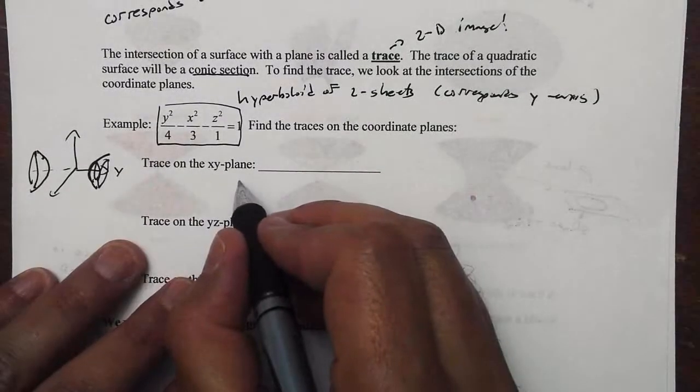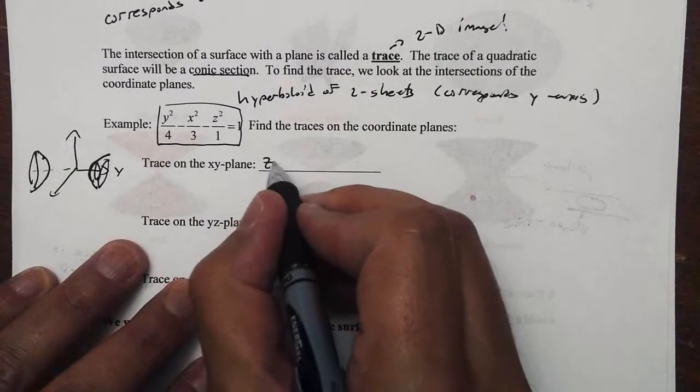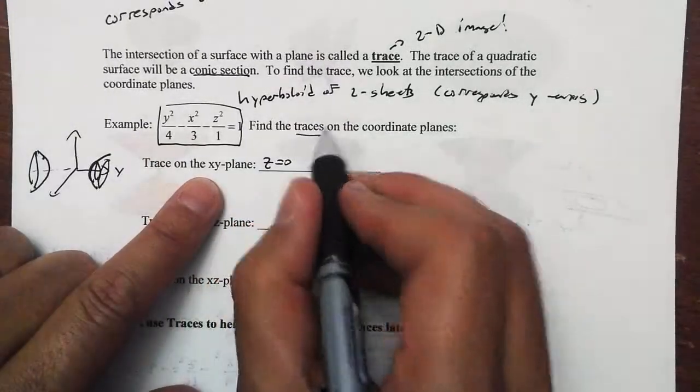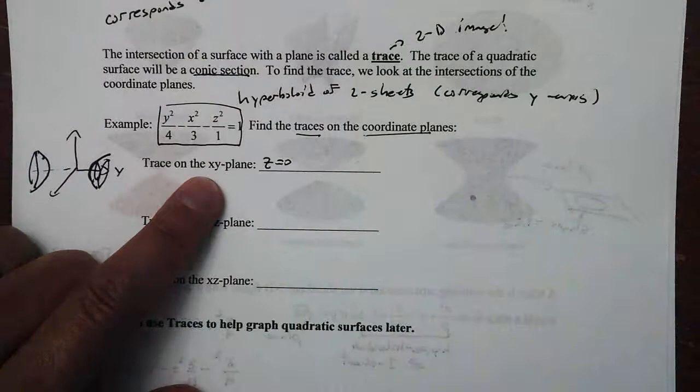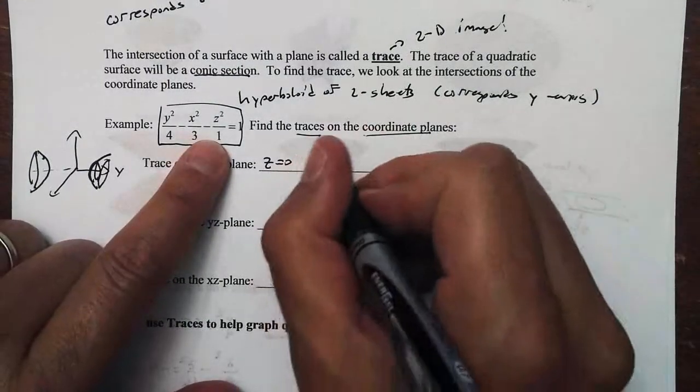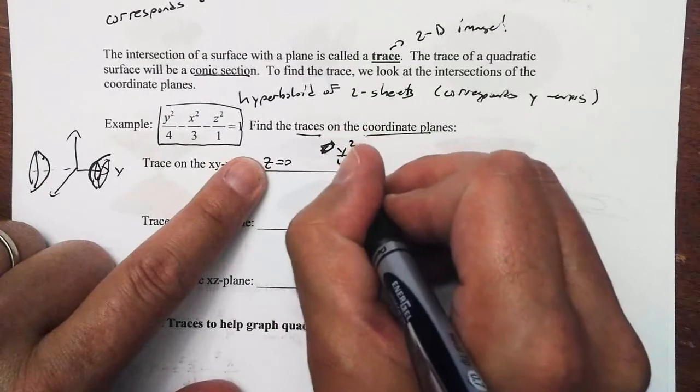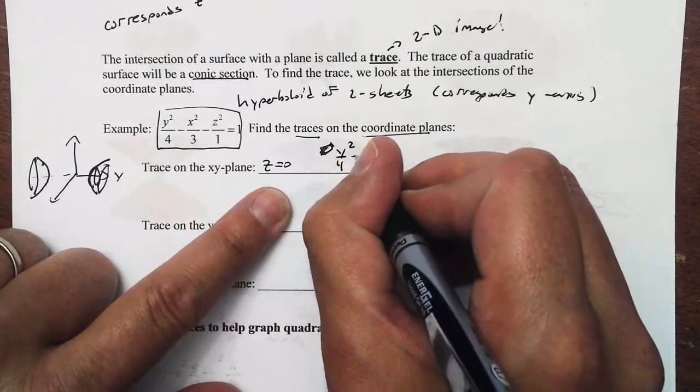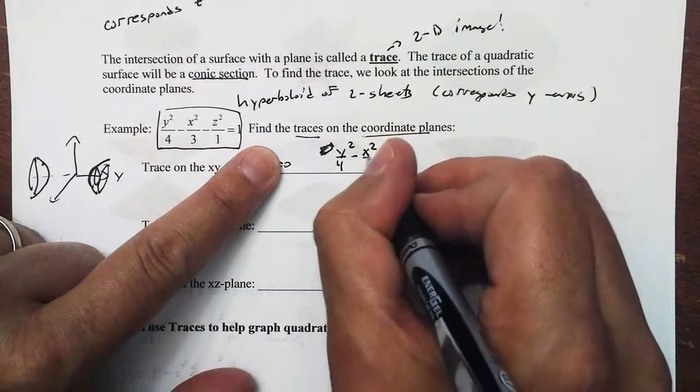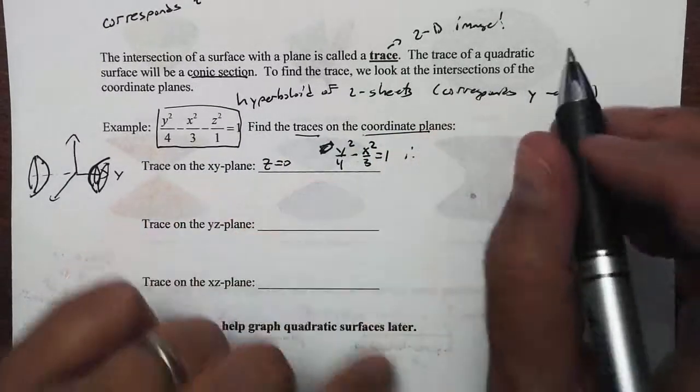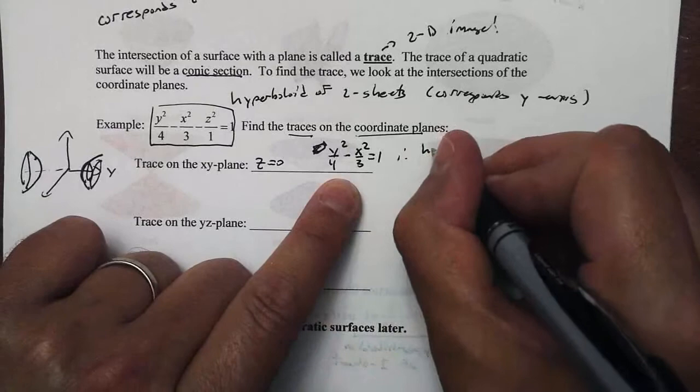I want to find the trace on the xy plane. Well, to do this, we let z equal 0. And if I let z be 0, we want to find the traces of the coordinate planes. If I let z be 0, we're going to get y squared over 4 minus x squared over 3 equal to 1. So we have to identify this. This is a hyperbola.